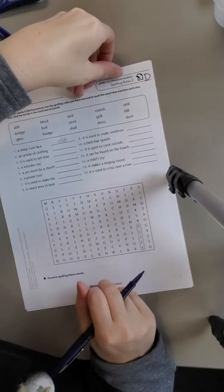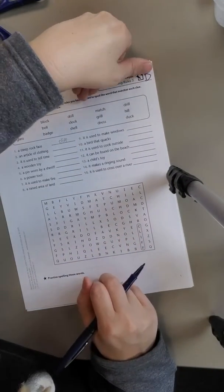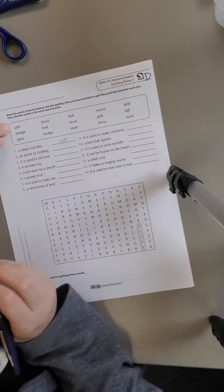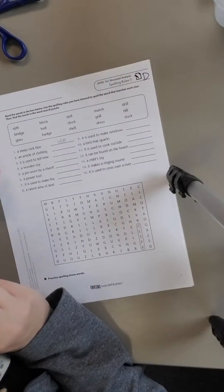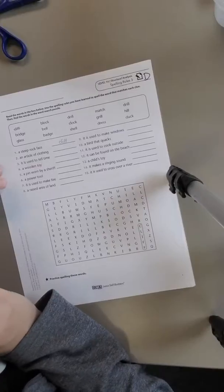Scholars, this is Level 16 Structural Analysis Spelling Rules 3, Sheet D. The first word up here is cliff. Make sure you have the correct paper. If you don't have the same paper, you need to switch videos or switch papers.